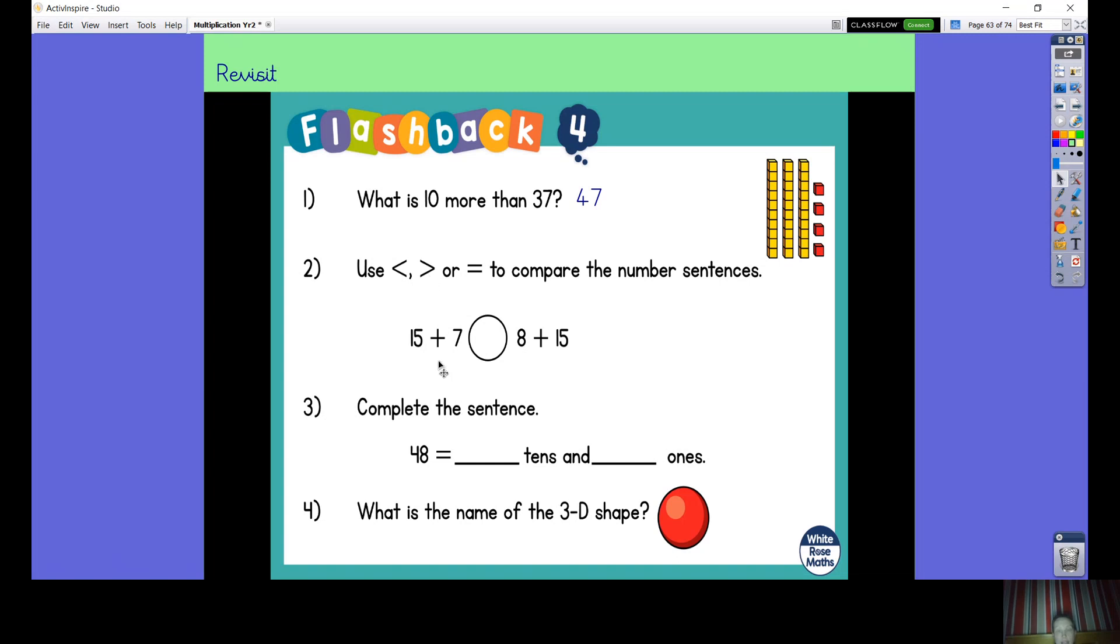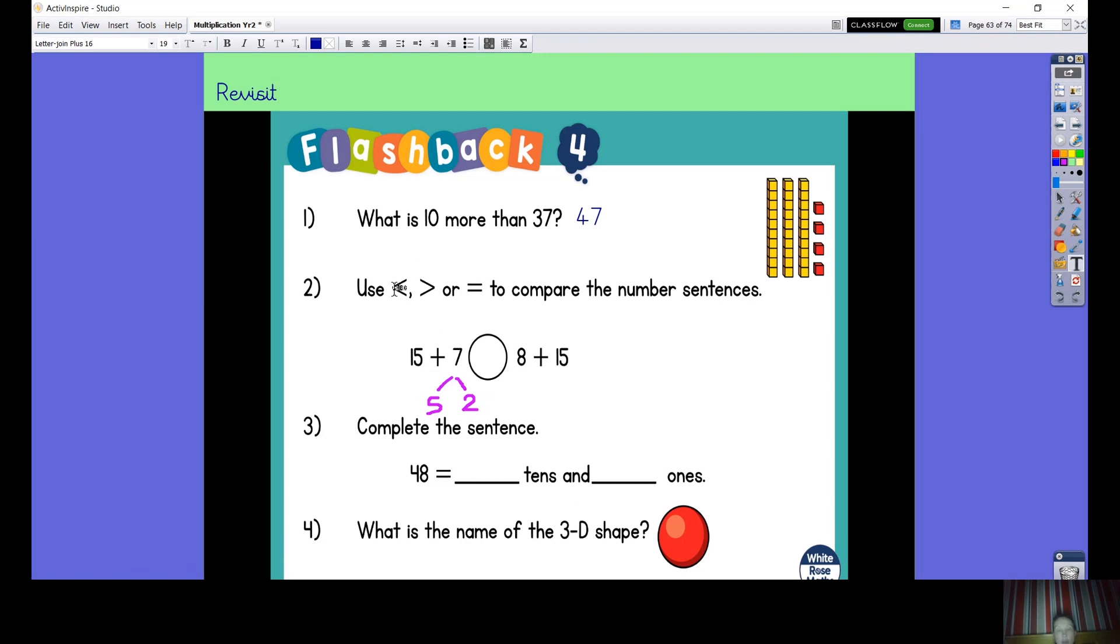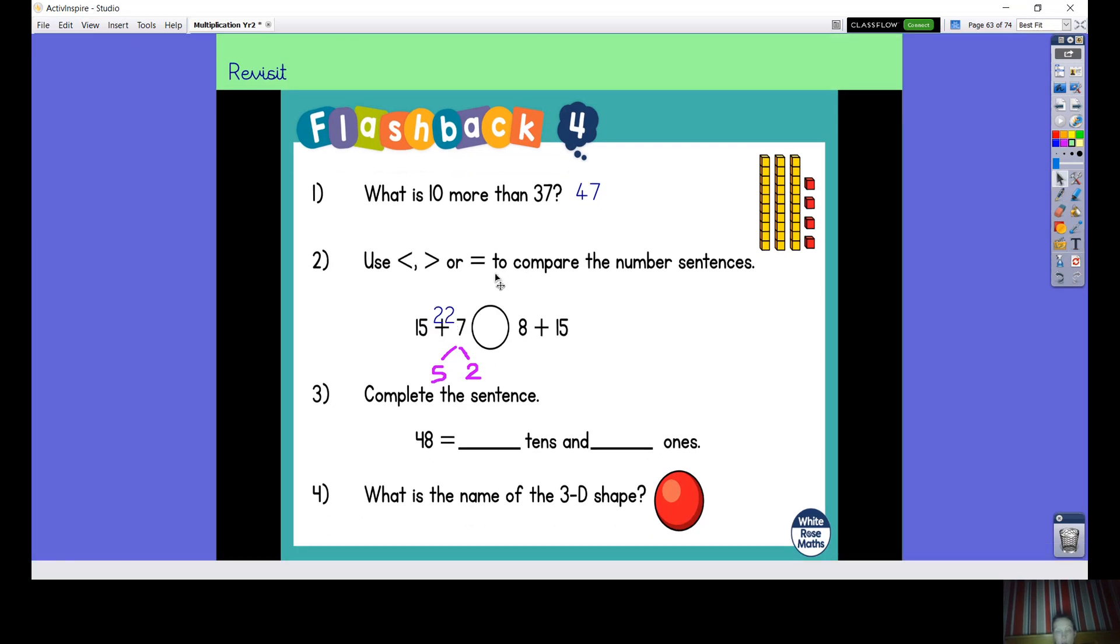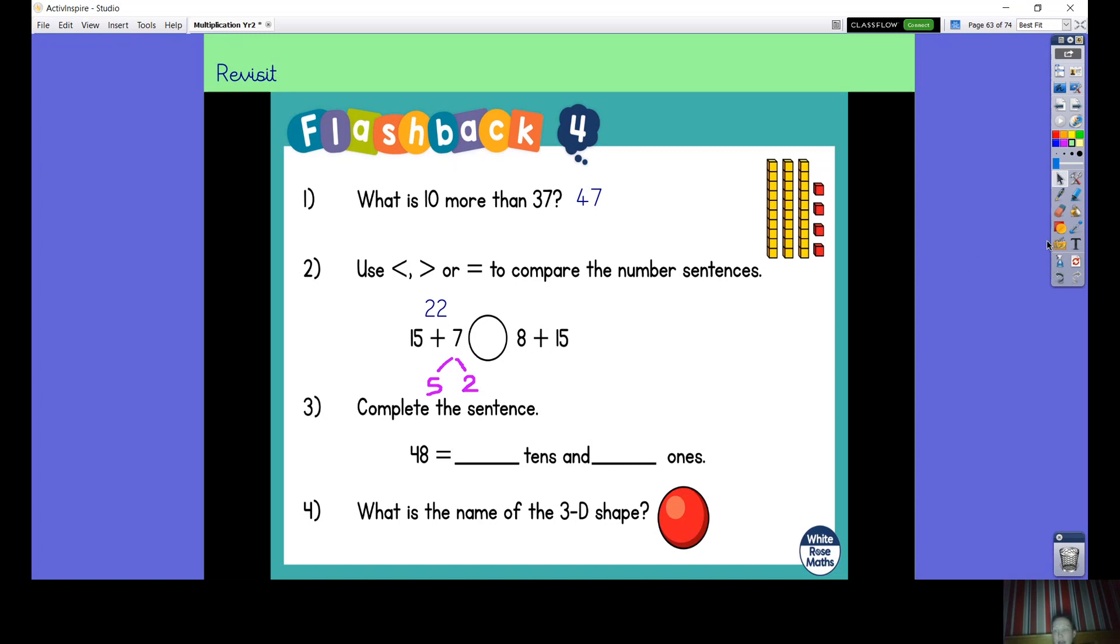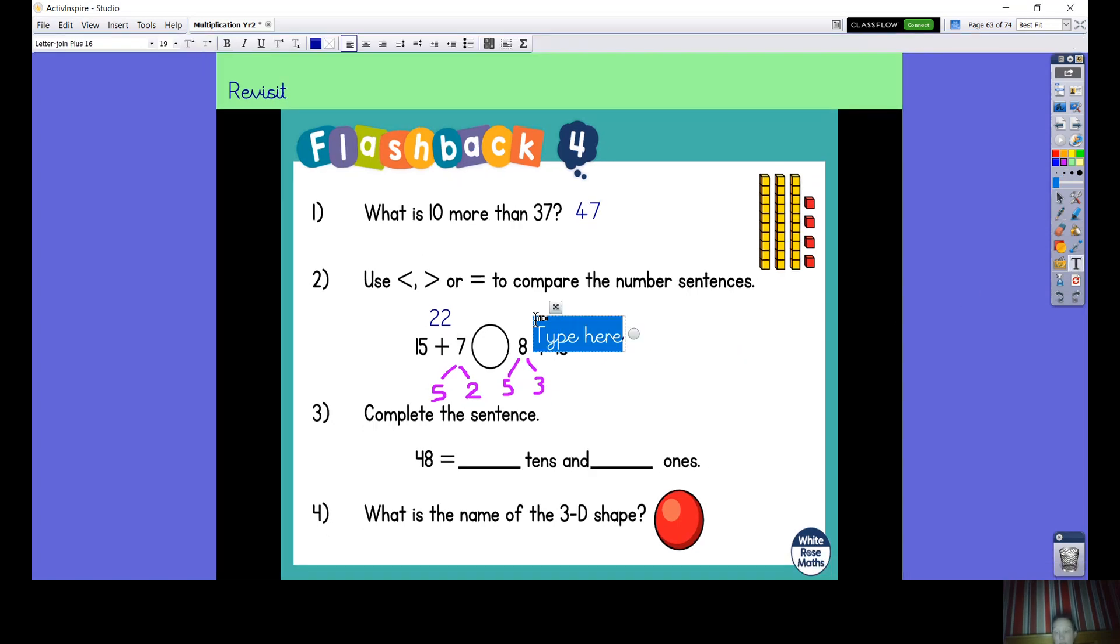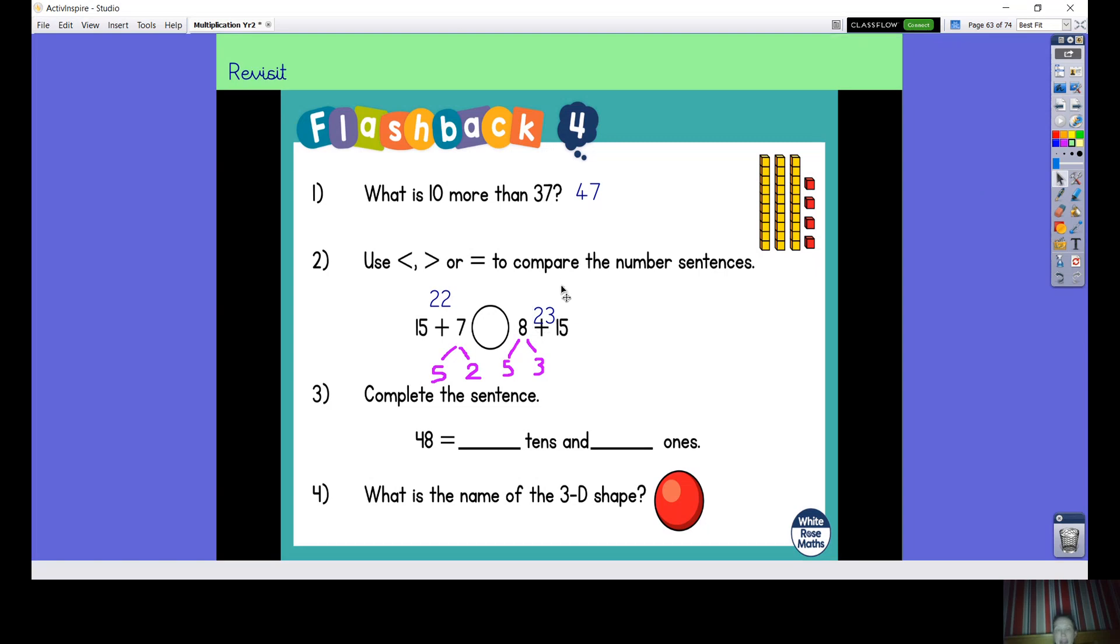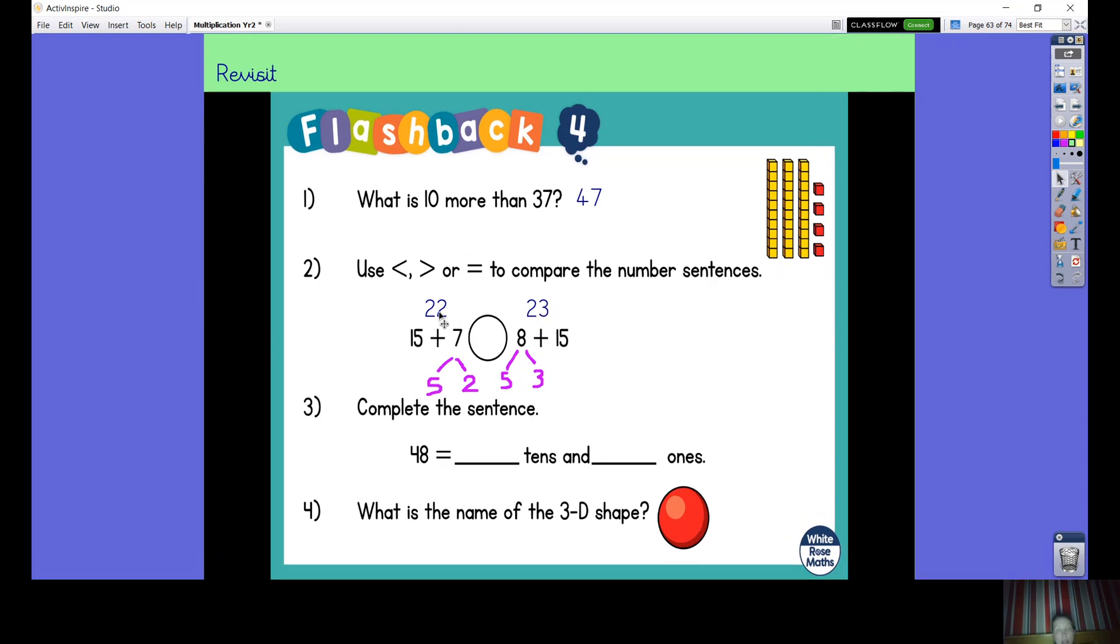Greater than, equal to, or less than symbols. Let's have a look at the number sentences. Let's work out this one first. So we've got 15 add 7. So if I break 7 down into 5 and a 2, 15 add 5 makes 20 and 2 more makes 22, so this side is equal to 22.